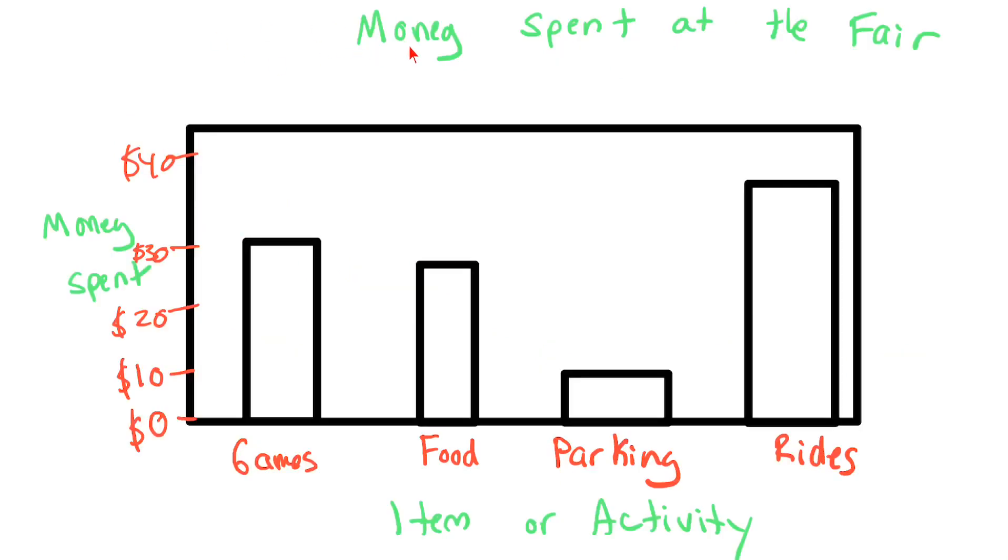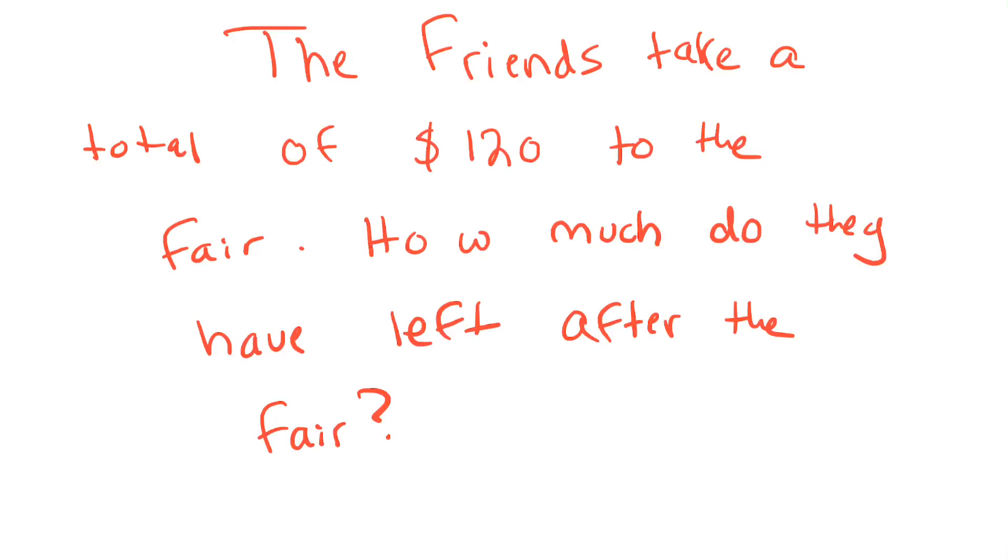So here's an example. This graph is the money spent at the fair. Here we have the money spent and the item or activity. There's games, food, parking, and rides. You can see that they spent 30 in games, 25 in food, 5 in parking, and 35 on rides. So we're going to answer questions about this data. The question says, the friends take a total of $120 to the fair. How much do they have left after the fair? So the first thing you have to do is find out how much they spent and subtract that from the total.